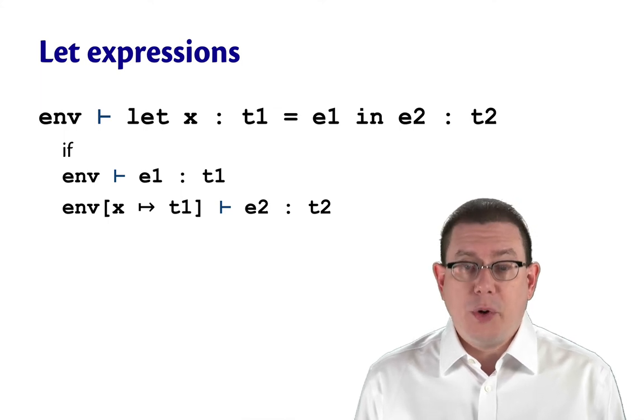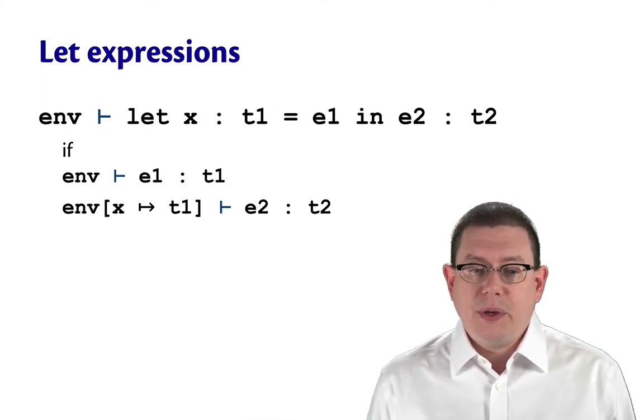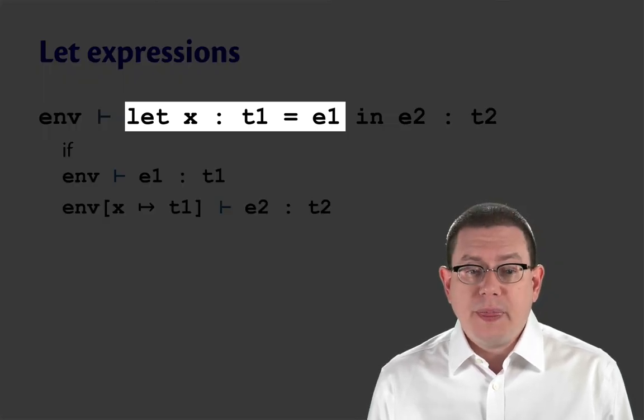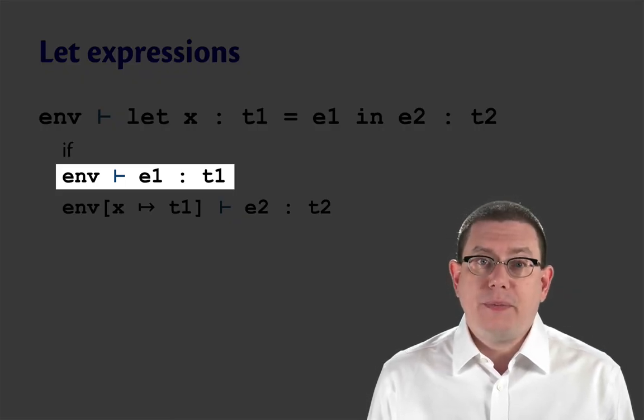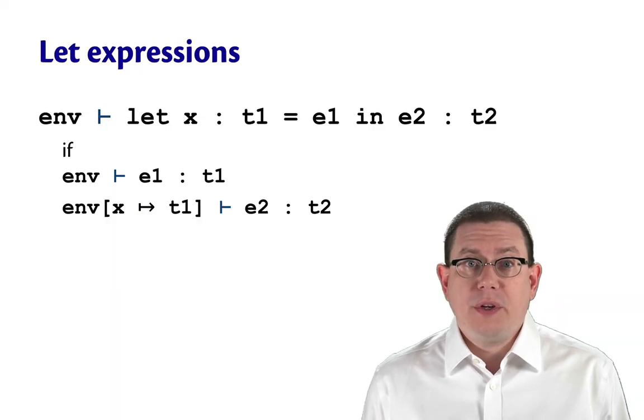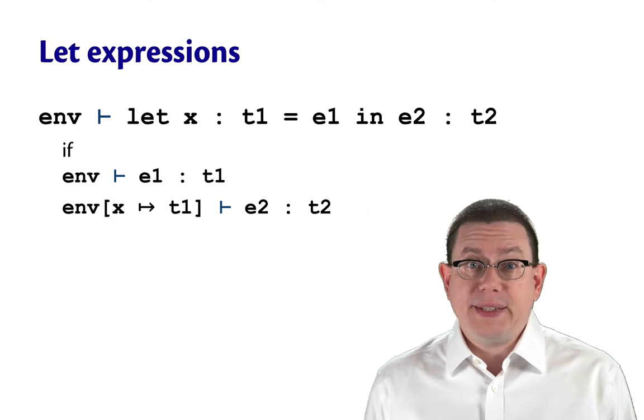Finally, let-expressions are the most complicated because they actually have a type showing up inside of them syntactically. So if we have let x colon t1 equal e1, then the first thing we need to do is type check e1 in that same static environment to make sure that it really does have type t1. So we're double checking here that the programmer got it right when they wrote down that type annotation.